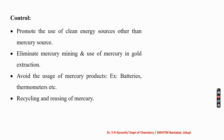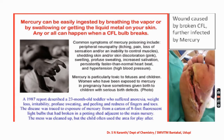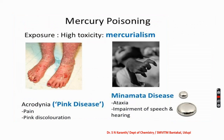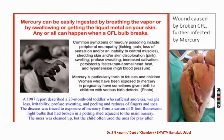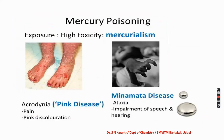We must minimize the use of mercury. Mercury poisoning includes peripheral neuropathy — that is pain, loss of sensations, inability to control muscles, and skin discoloration, also known as pink disease or Minamata disease. Mercury is particularly toxic to children. Men exposed to mercury during pregnancy may have children with serious birth defects. That is why we must avoid the use of mercury.